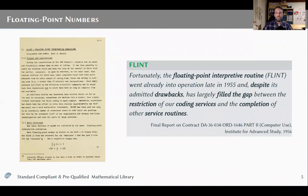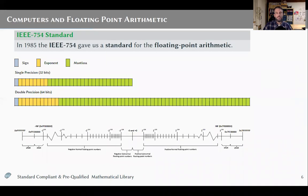Luckily, since around 1955, we have the so-called floating point arithmetic, which takes care of one of the problems that numerical computing has — which is the required scaling up and down of numbers throughout the algorithms to avoid some computing problems. But it was not until 1985 that this floating point arithmetic was standardized in the IEEE 754 standard, which provides single and double precision floating point numbers in 32 and 64 bits, and also 128 bits.